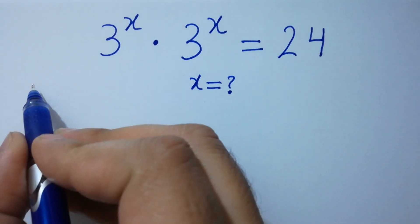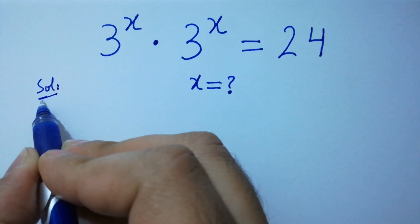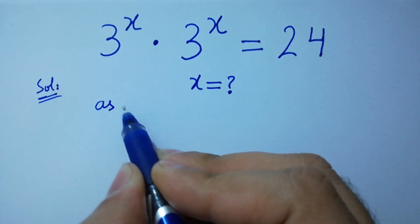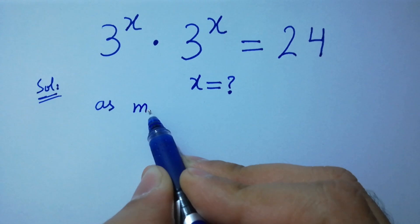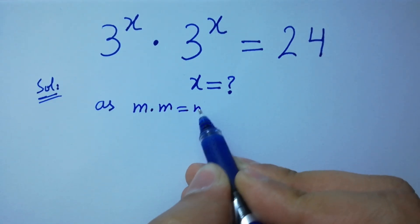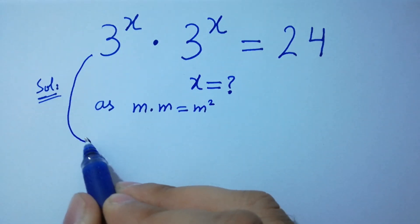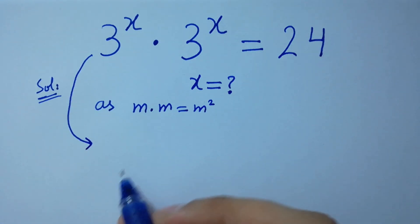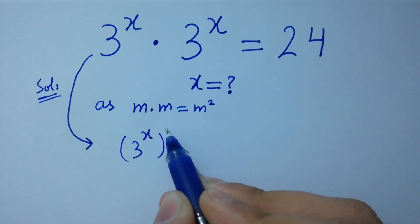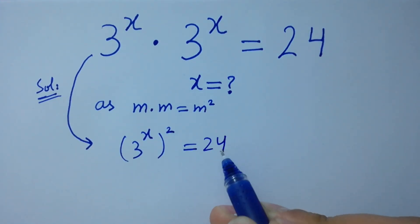Let's have a solution here. As we know, m times m equals m squared. Then we have 3 to the power x, to the whole power 2, equal to 24.